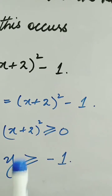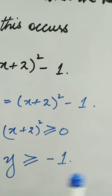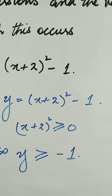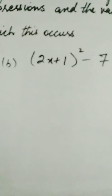For the value x = -2, this expression becomes 0 and y ≥ -1. Here we have another question: y = (2x + 1)² - 7. As we know, (2x + 1)² ≥ 0, so y ≥ -7. In order to find the value of x for which this occurs, we equate the expression with 0 and get 2x + 1 = 0, or x = -1/2.